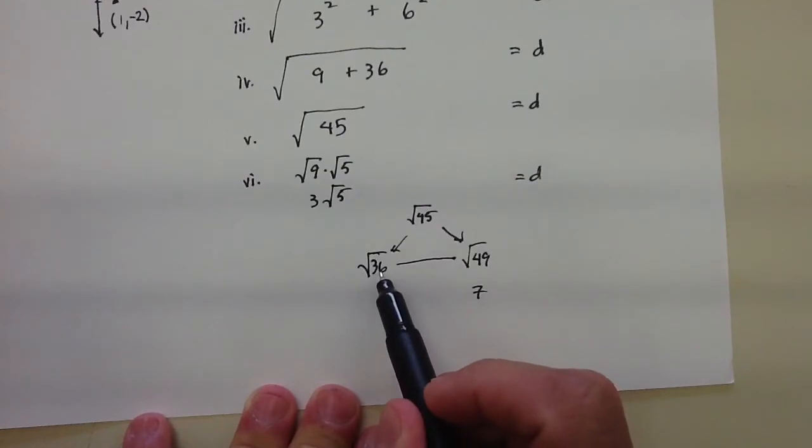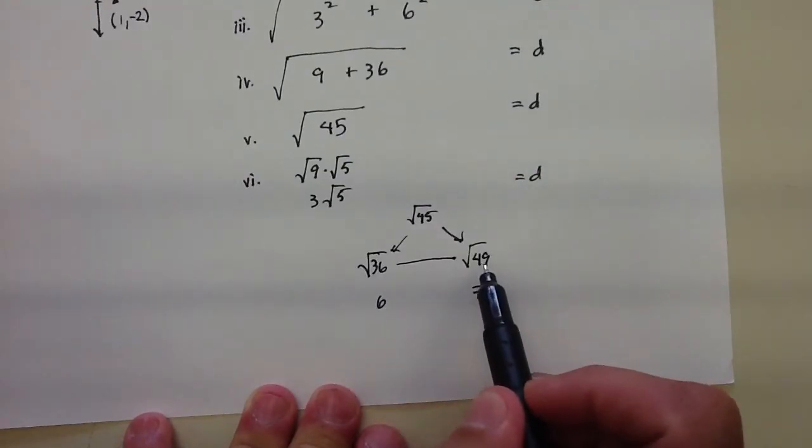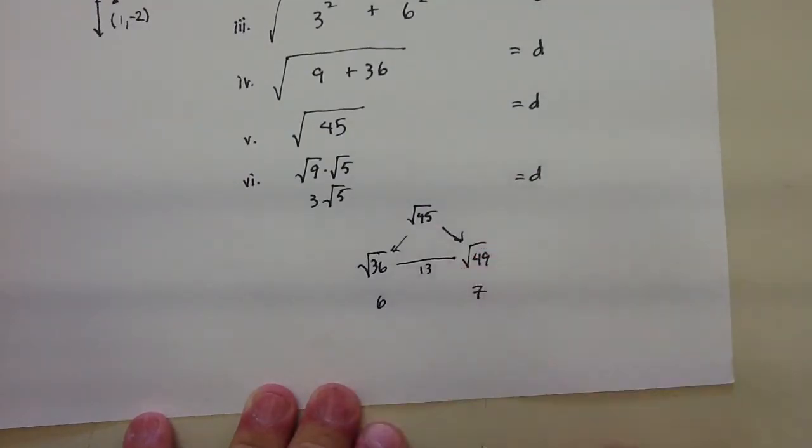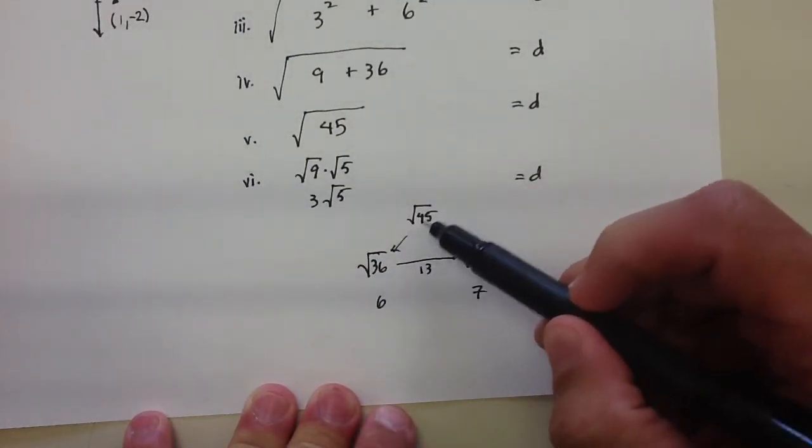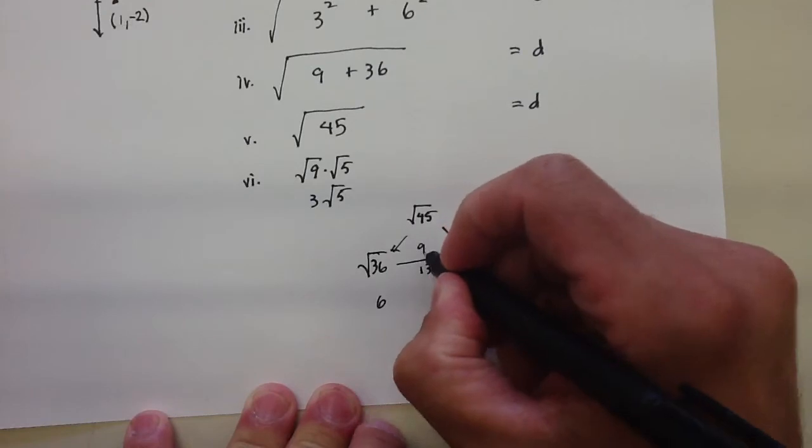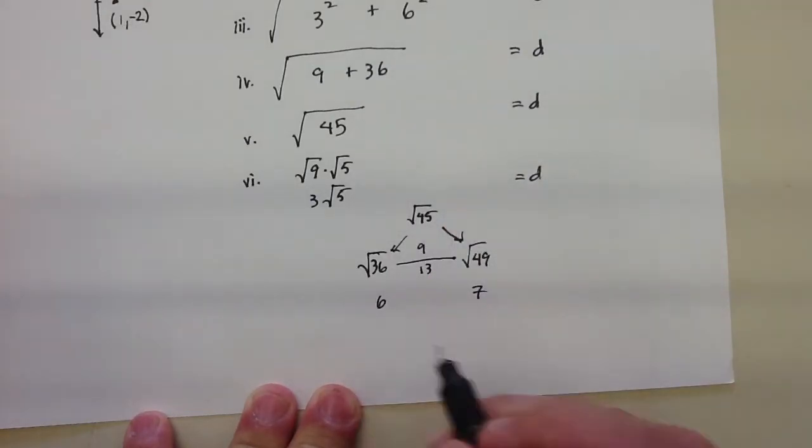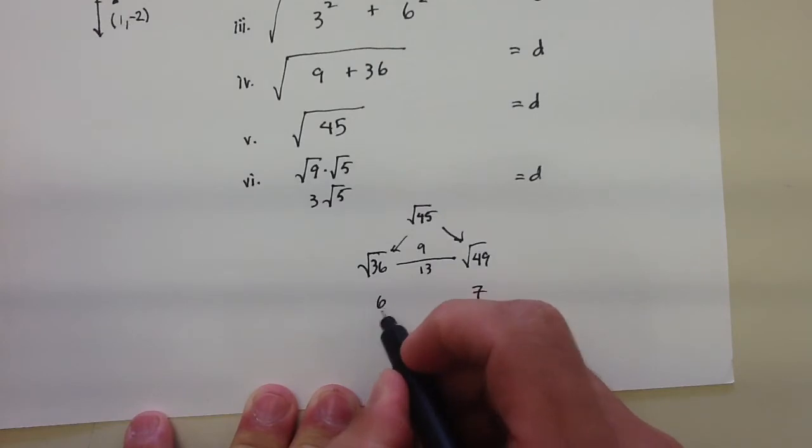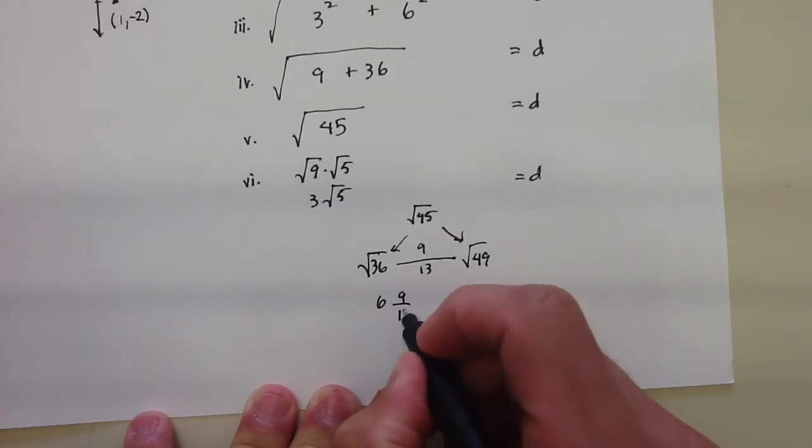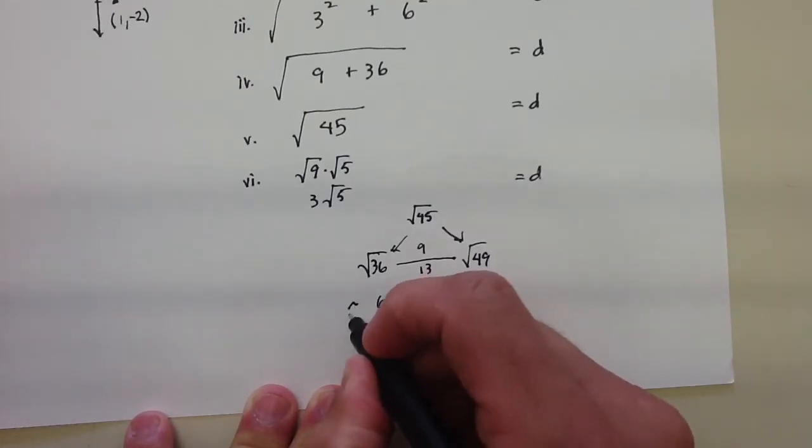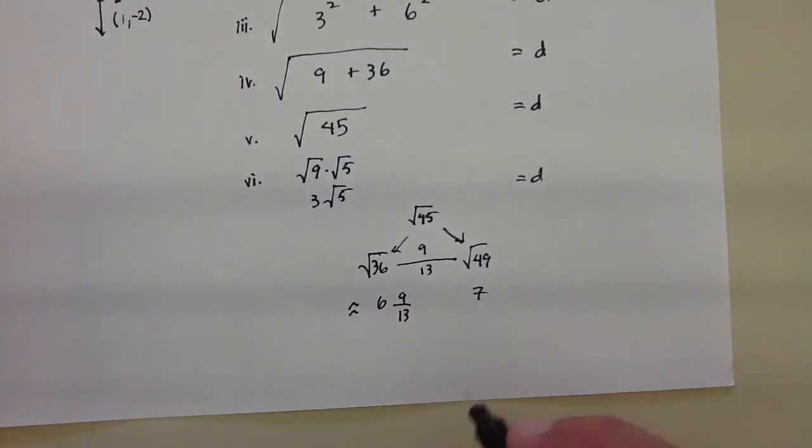And I'll show you how I show my students to estimate that. I say, basically, the distance between 36 and 49 is 13. The distance between 36 and 45 is 9. So the square root of 49 is basically 6 and 9 thirteenths. And that would be like an approximate answer. And if you go ahead and use your calculators, you'll see that's about right.